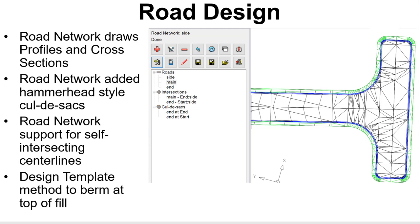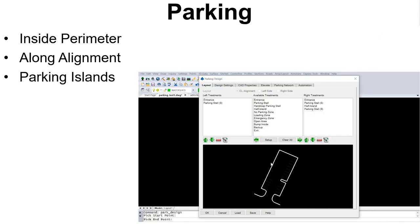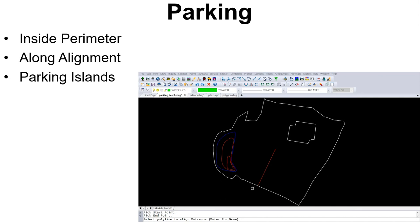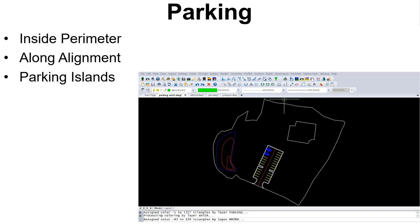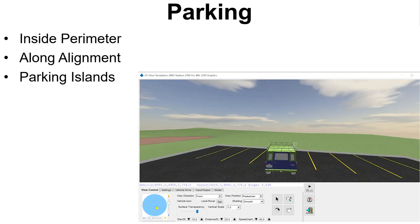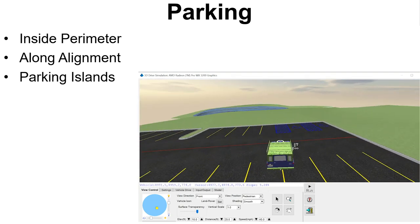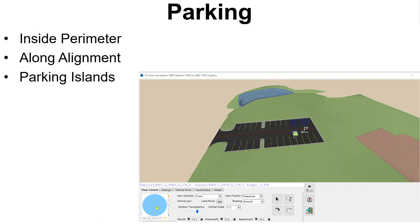An update to road design template is the ability to place a berm at the top of the fill. There are some new parking layout tools. Parking Inside Perimeter creates a parking layout within a closed polyline — you can grip edit the perimeter and the layout dynamically updates. Parking Along Alignment creates a series of parking stalls, islands, and zones along a centerline. You can elevate the parking layout for quick site modeling. There's also a new command for creating parking islands of different styles.